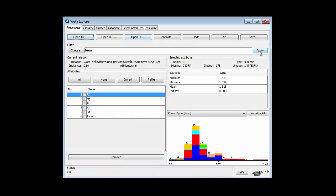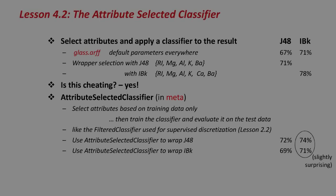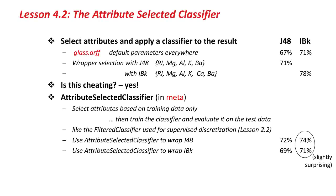I'm going to go back and undo that filter. Back to the slide. I get improved accuracy. The question is: is this cheating? The answer is yes, it certainly is. The reason is because we're using the entire dataset to decide on the attribute subset. We should really just use the training data to decide on all of those things, and then test the final result on the test set.